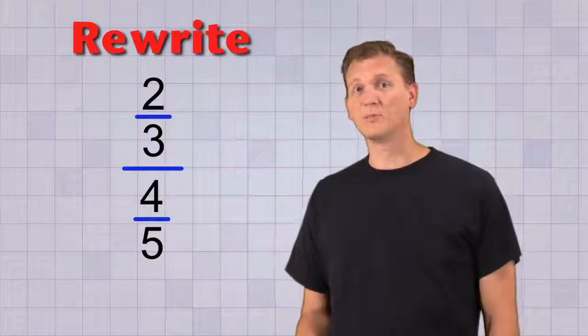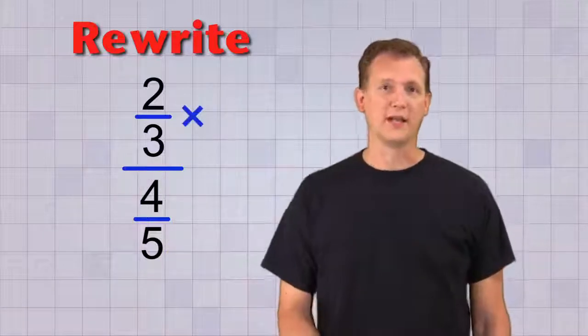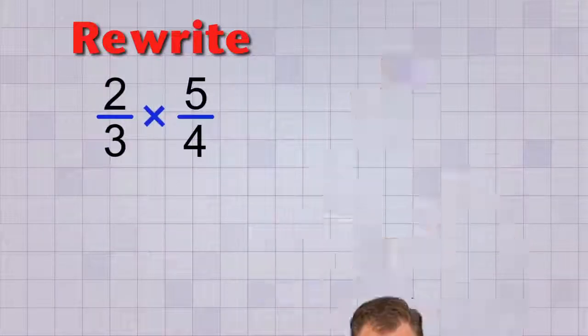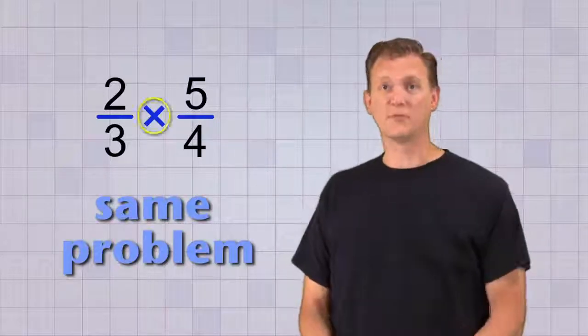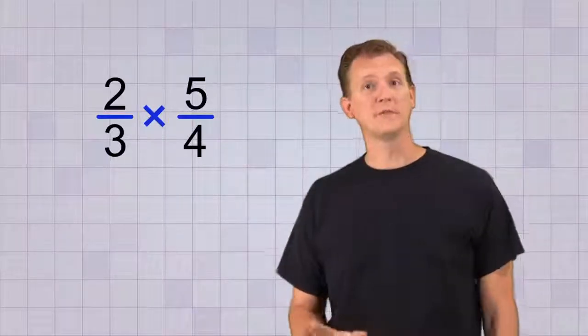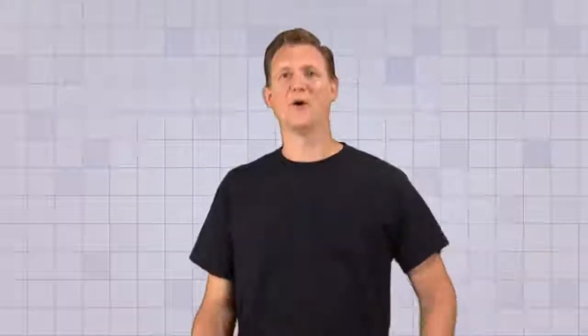Let's rewrite this as a multiplication problem by taking the reciprocal of the bottom number, the fraction that we're dividing by, and multiplying it by the fraction on top. There! That looks easier to do, and it's really the same problem. We just need to multiply to get the answer. So 2 times 5 equals 10, and 3 times 4 equals 12.